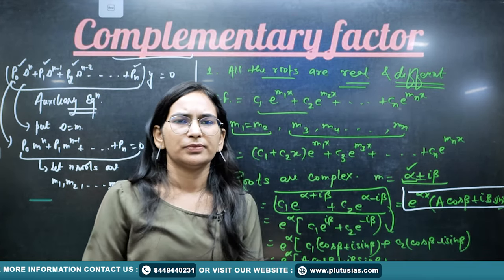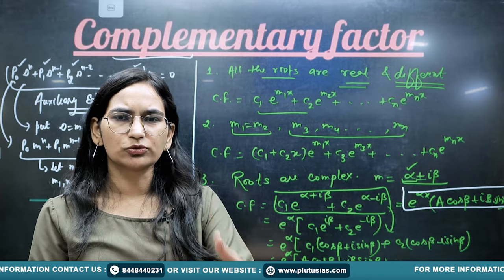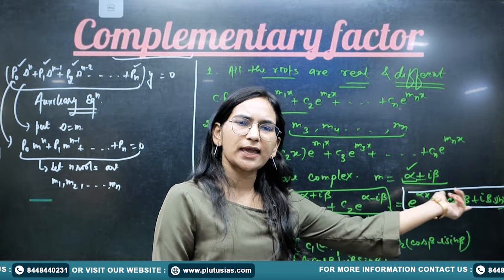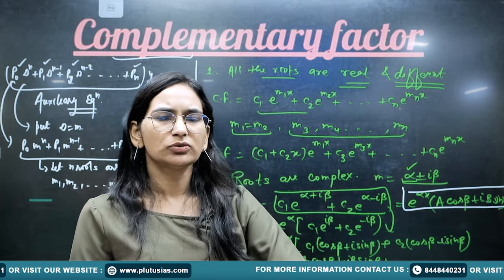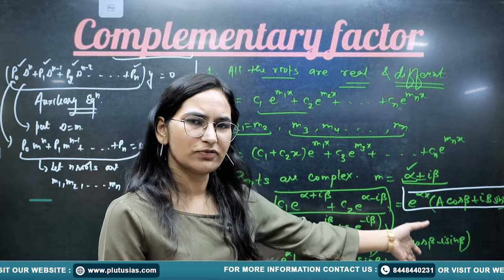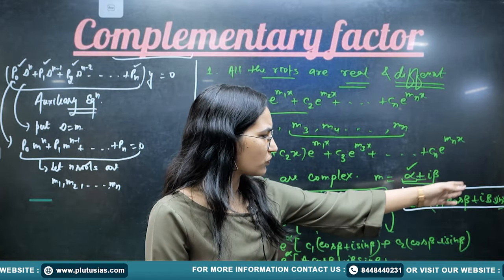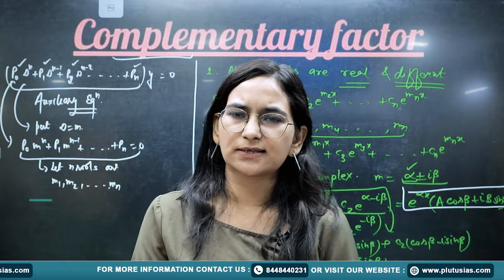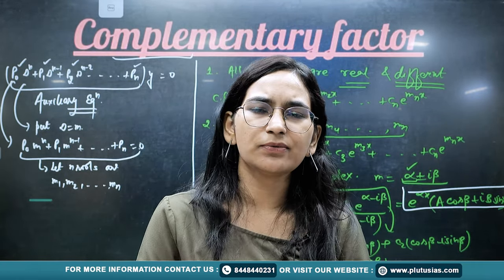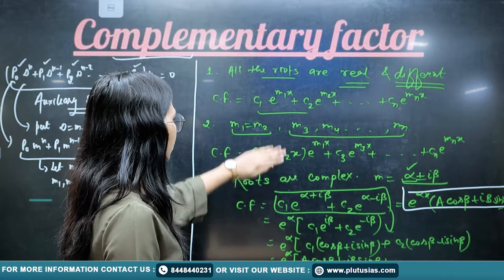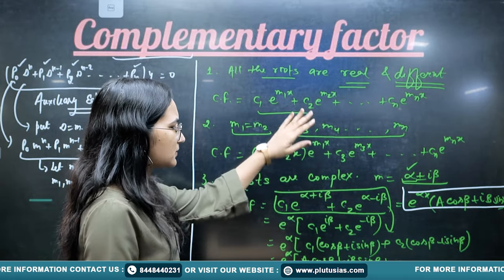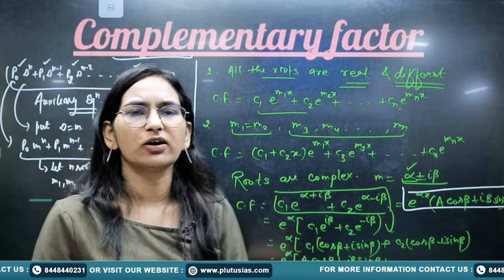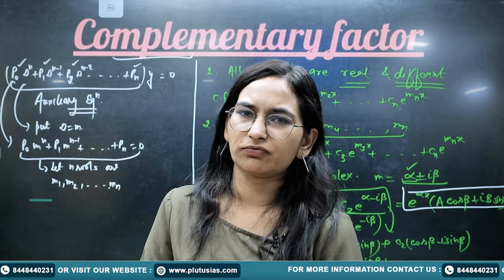Similarly, if complex roots are repeated, then multiply the constants by (A₁ + B₁x) instead of just A and B. That is how you write the complementary factor for repeated complex roots. This was all about how to find out the complementary factor.